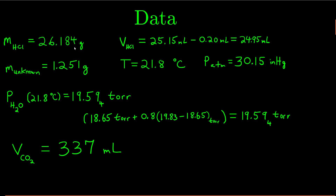Now you guys understand, your numbers are going to be different than mine — different than everybody else's. My volume of hydrochloric acid that I added is my final volume minus my initial volume; I measured this with a burette. The mass of my unknown was 1.251 grams. Don't try to get exactly 1.25 grams — it was just pure luck that I ended up getting real close to that. If it was 1.1, no problem.